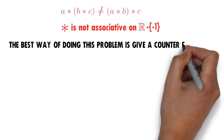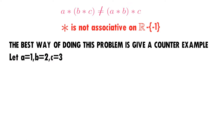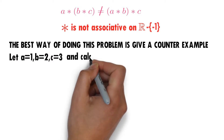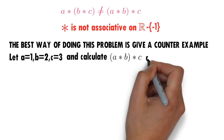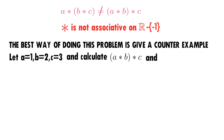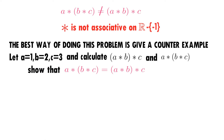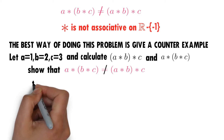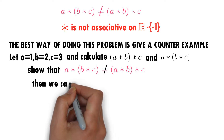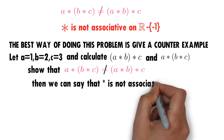The best way of doing this problem is to give a counter example. Counter example means we will prove by taking some numbers. Let A equals 1, B equals 2, and C equals 3. Calculate A★(B★C) and (A★B)★C, and show that they are not equal. Then we can say that star is not associative.